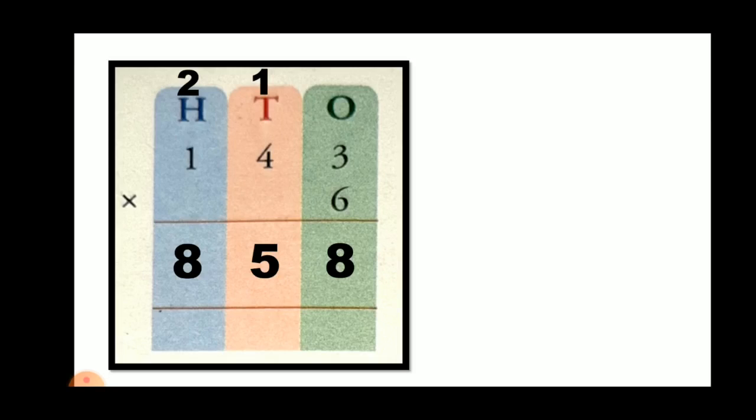Here we have one example: 143 into 6. Multiply 6 one by one from the back side, that is from the ones place.